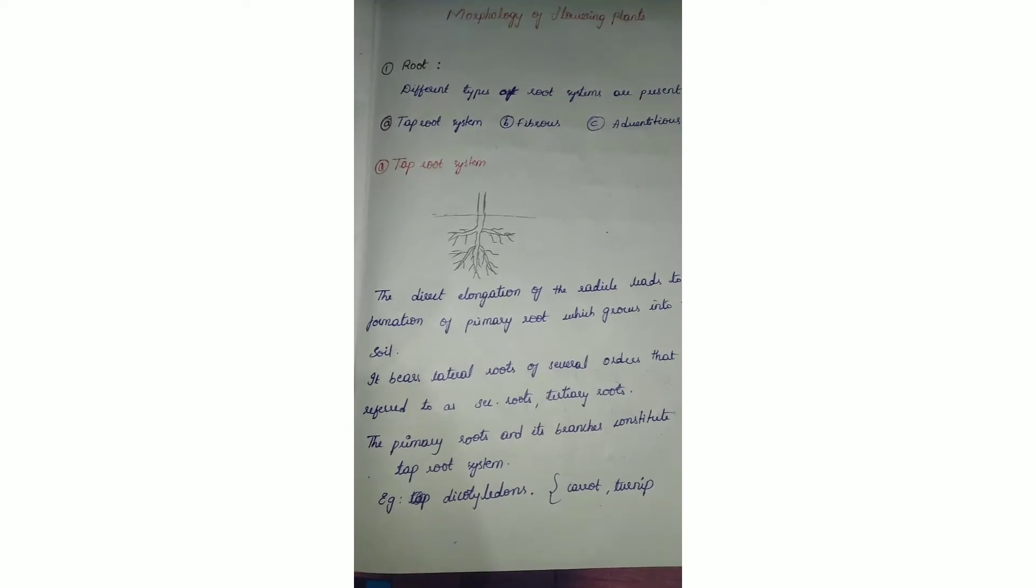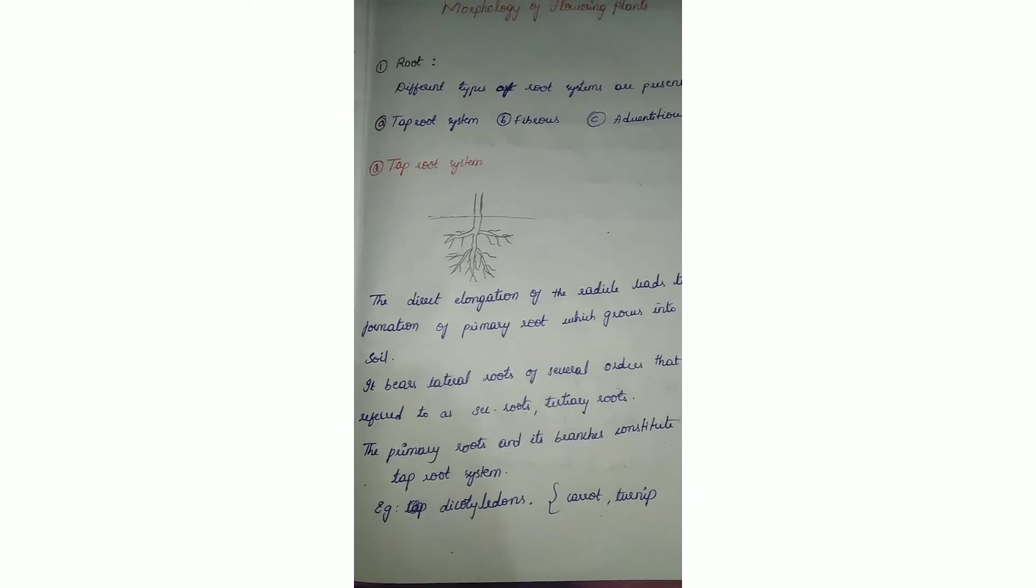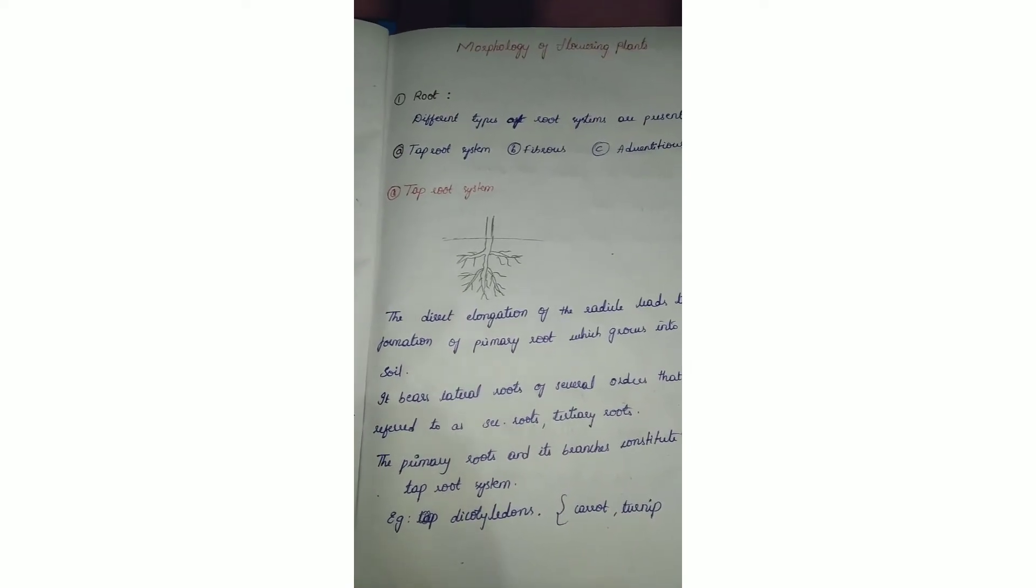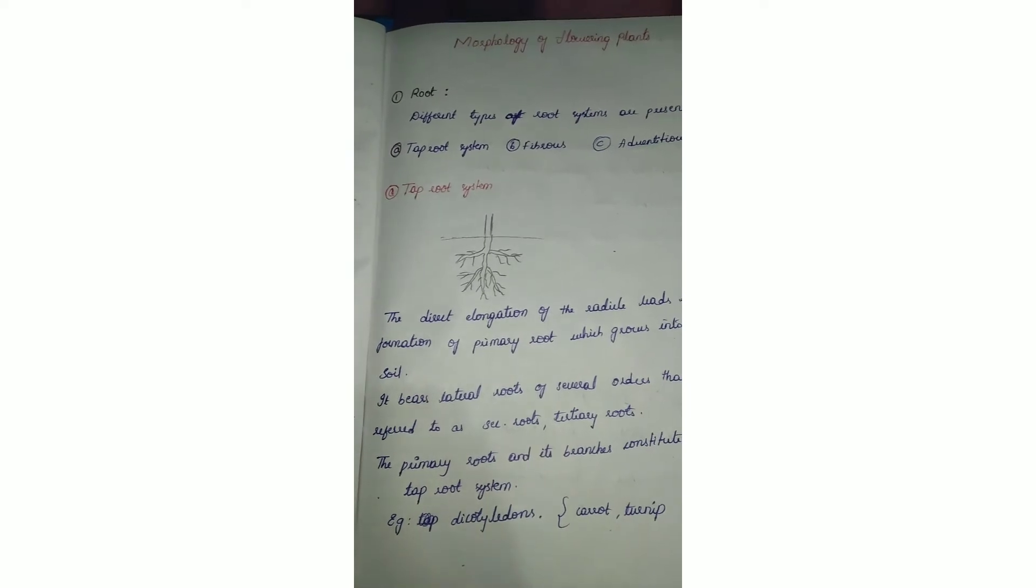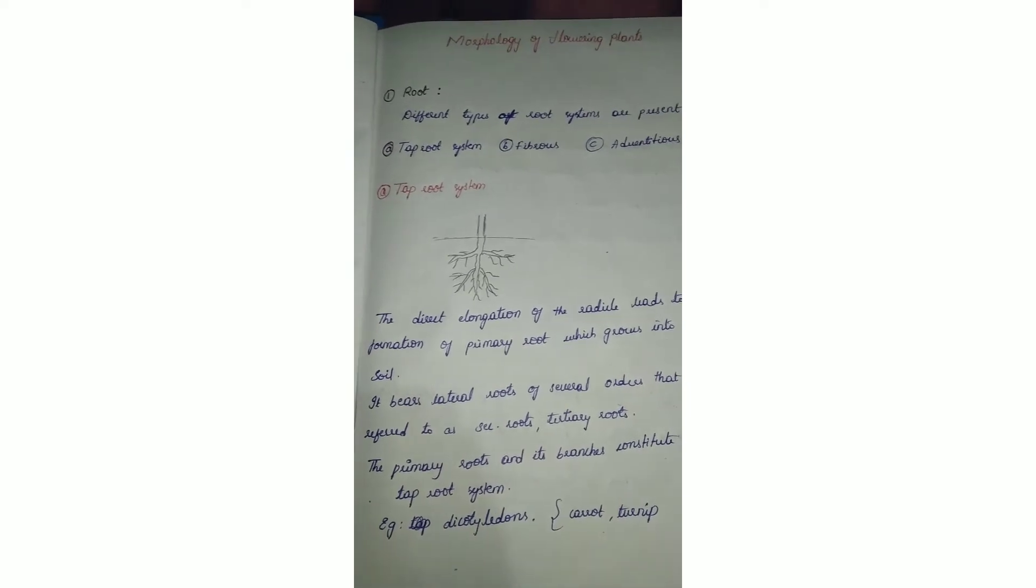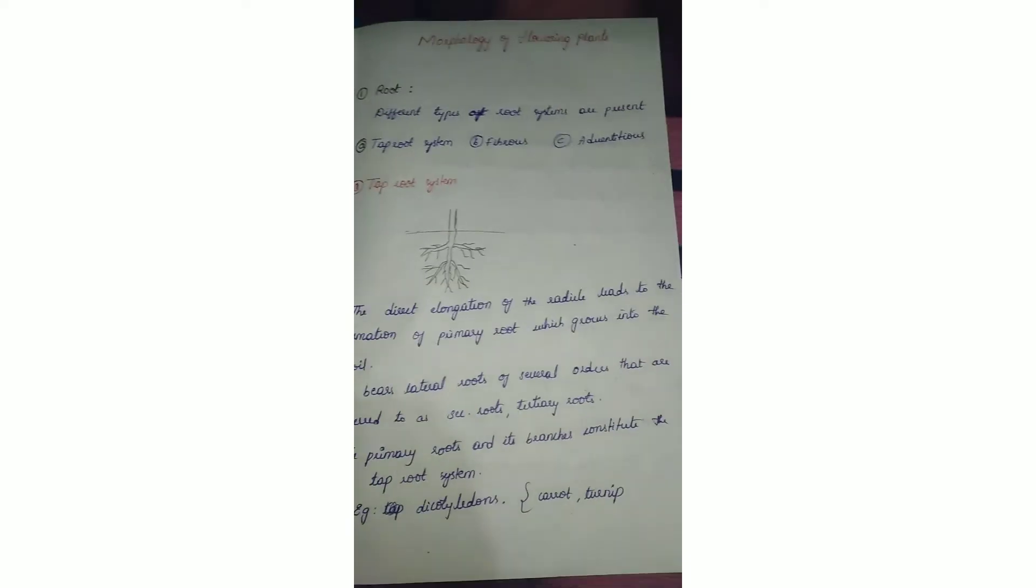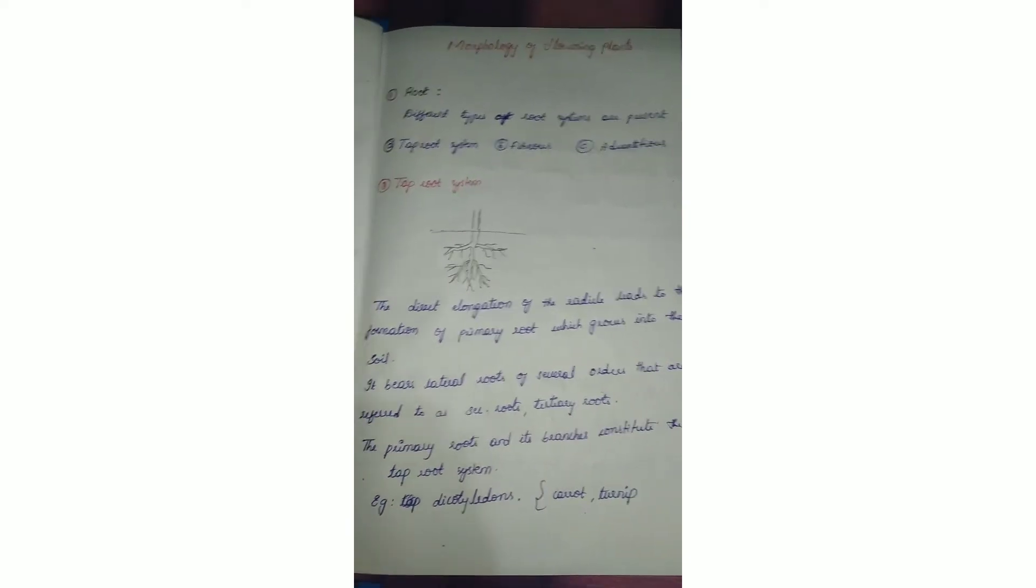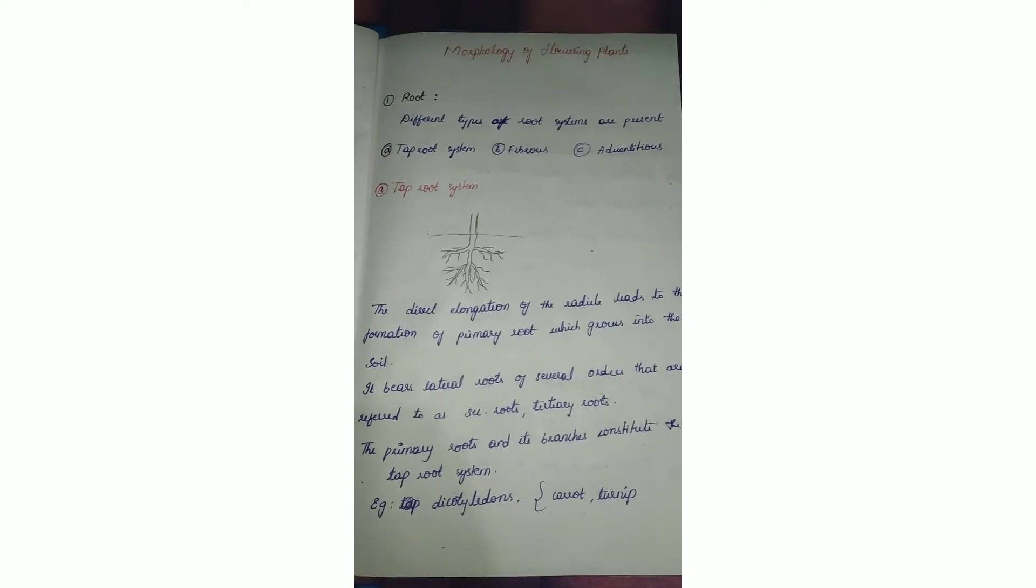First one is tap root system. You can see here the diagram how I have drawn this. It has one main root axis from which the primary, secondary, and tertiary roots are developed. The direct elongation of radicle leads to the formation of primary root.